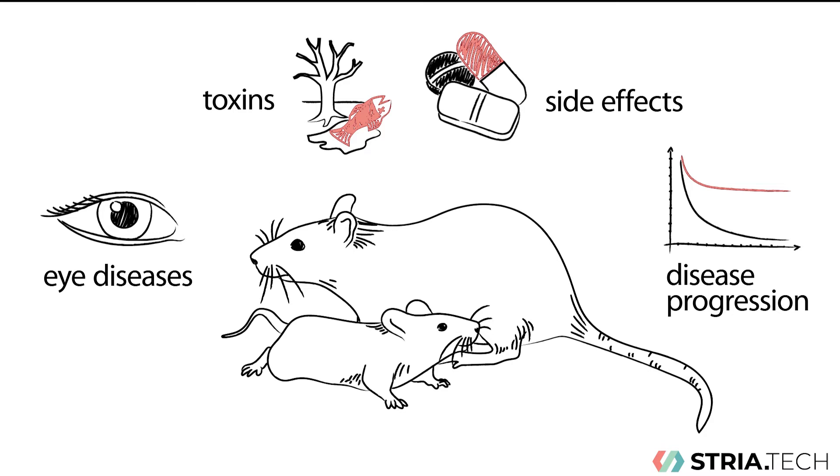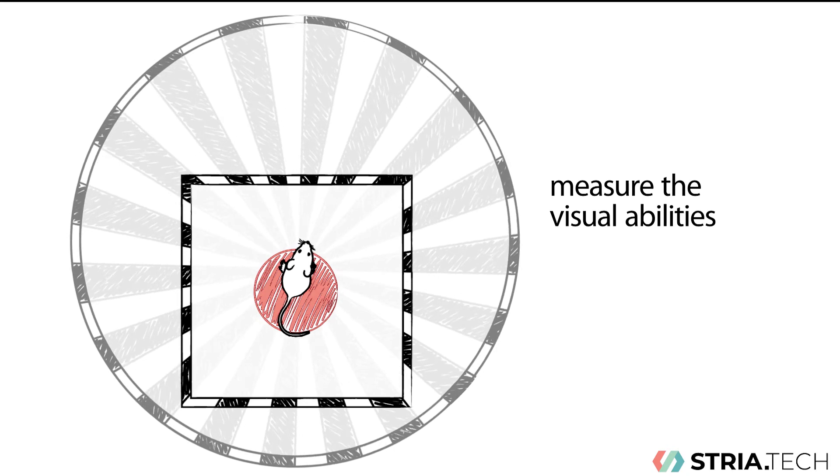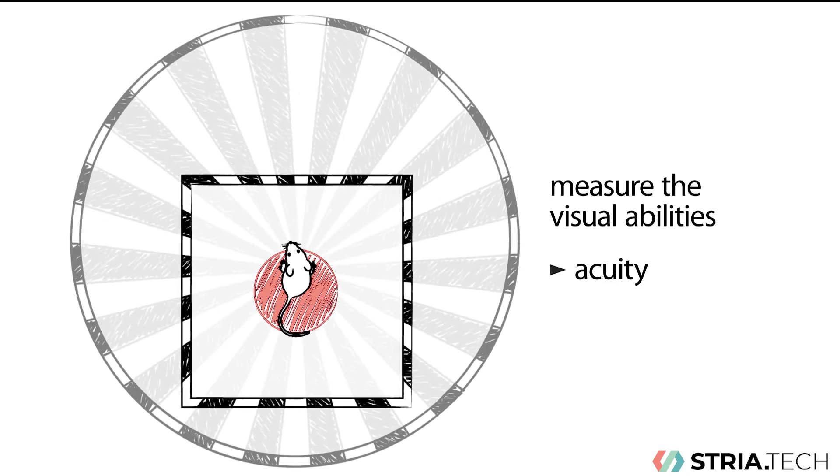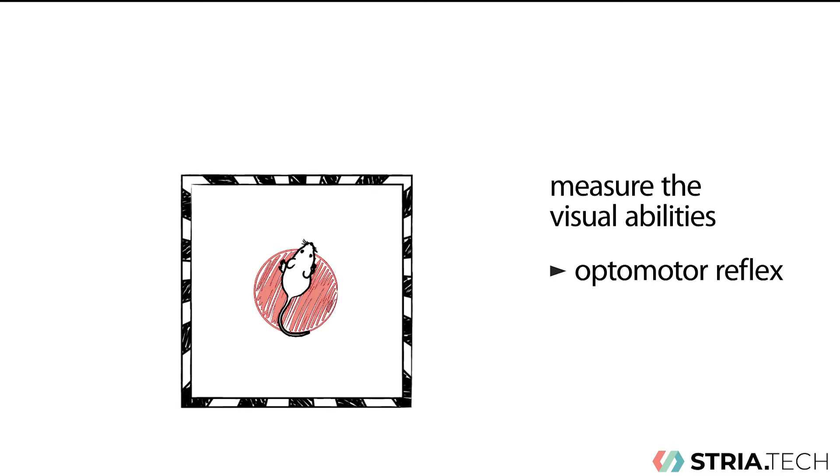With our Optodrum, you can measure the visual abilities of your animals in terms of acuity and contrast sensitivity. The animal follows a moving pattern because of the optomotor reflex. No training is necessary.